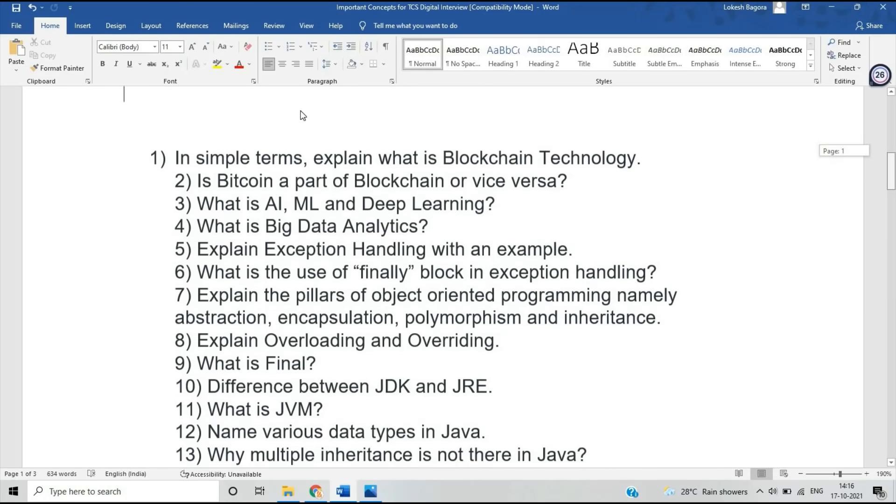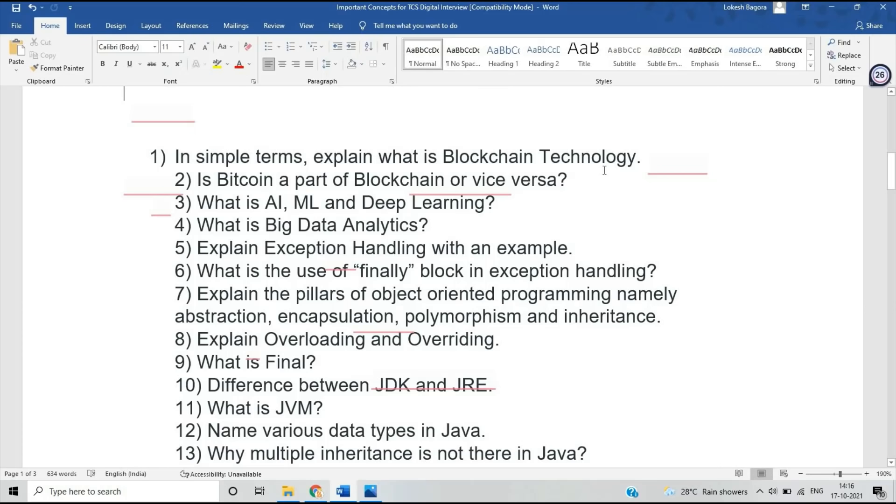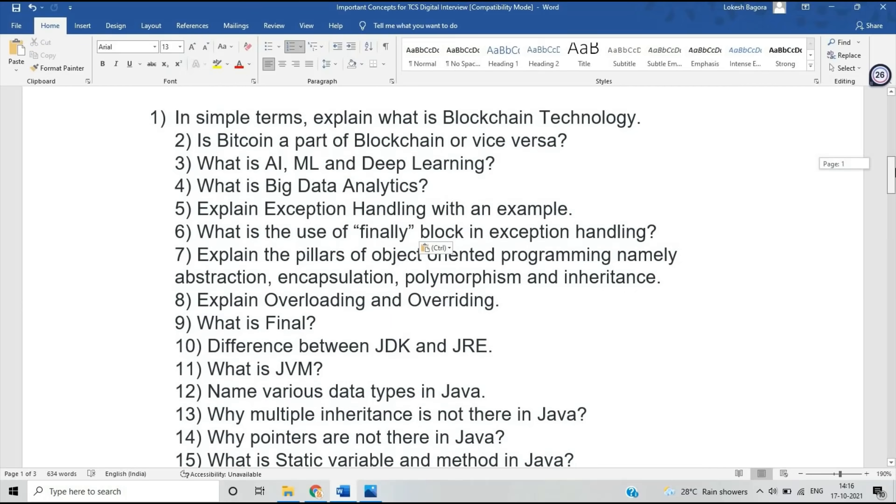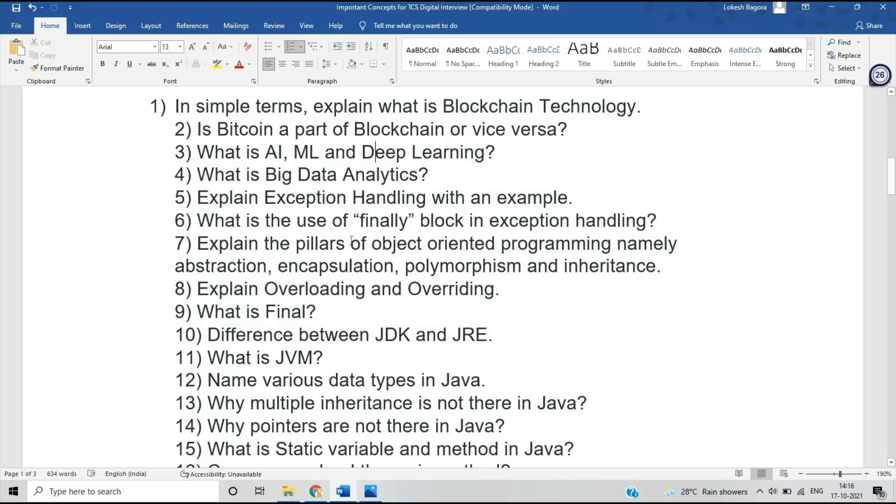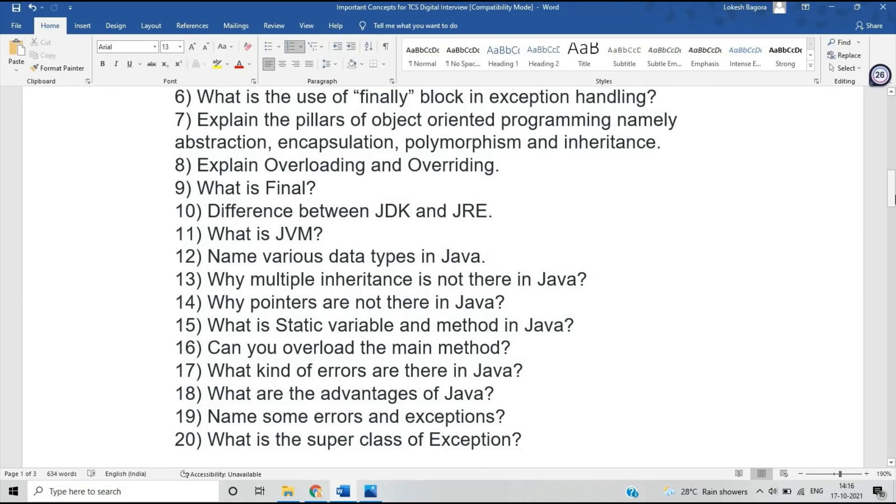The following questions were asked in the technical round: In simple terms, explain what is blockchain technology. Is Bitcoin a part of blockchain or vice versa? What is AI, ML, and deep learning? What is big data analytics? What is exception handling? Explain the pillars of object-oriented programming: abstraction, encapsulation, polymorphism, inheritance. What is JVM? Difference between JDK and JRE.